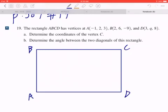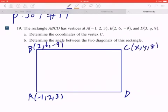And if you go back to the given, A is (-1, 2, 3). B is going to be (2, 6, -9). C is what we're looking for, let's call this (X, Y, Z). D is going to be (3, Q, 8).